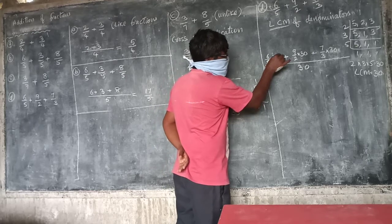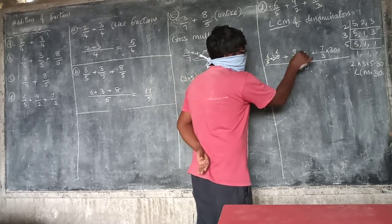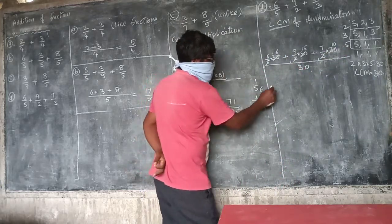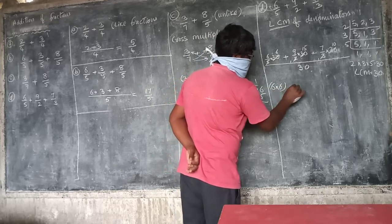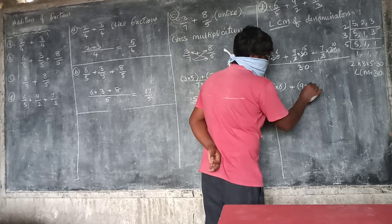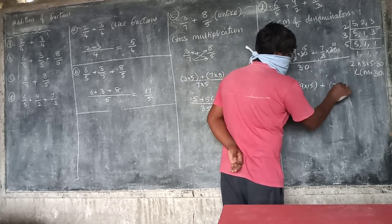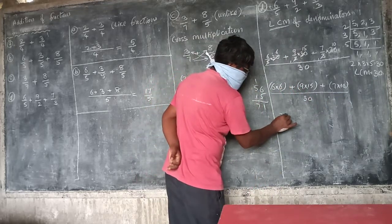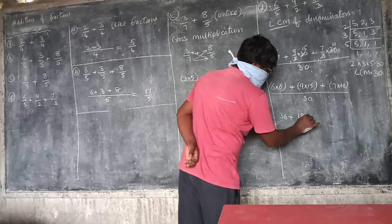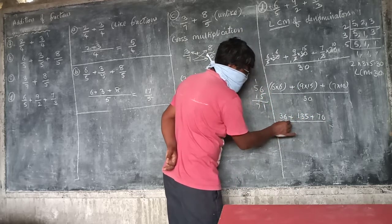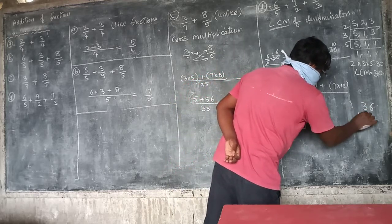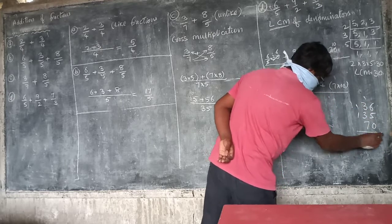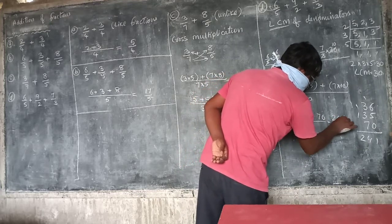Now cancel here: five ones are five, five sixes are thirty. Two ones are two, two fifteens are thirty. Three ones are three, three tens are thirty. What is left: six into six plus nine into fifteen plus seven into ten, by thirty. That is thirty-six plus one hundred thirty-five plus seventy, by thirty. Add these all: thirty-six, one hundred thirty-five, seventy — two hundred forty-one by thirty.